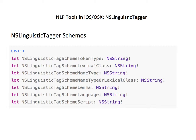So what are the available schemes and what do they do? First is tokenType, which tells us whether the token is a word, punctuation, whitespace, or other. Next is lexicalClass, which gives us the part of speech for words and the type for punctuation and whitespace. Then we have nameType, which gives us named entity recognition for personal, place, and organization names.